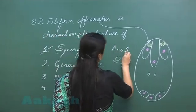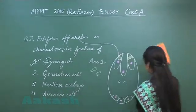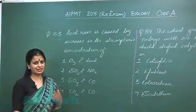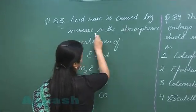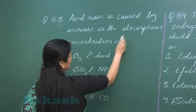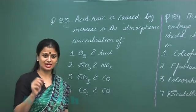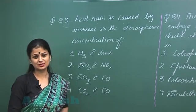So now let's move on to question number 83. In question number 83, acid rain is caused by increase in the atmospheric concentration of - you know that acid rain has pH less than 5. Now how is acid rain formed?